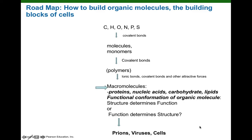We'll be building our organic molecules using six really common chemical elements: carbon, hydrogen, oxygen, nitrogen, phosphorus, and sulfur. And we'll be showing how through different types of chemical bonds — ionic bonds, covalent bonds, and other attractive forces such as hydrogen bonds and hydrophobic interactions — we're going to link these elements together and create molecules.